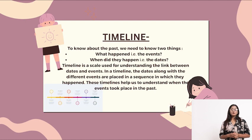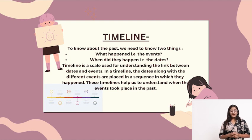Timeline. To know about the past, we need to know two things: what happened — that is the events — and when did they happen — that is the dates.